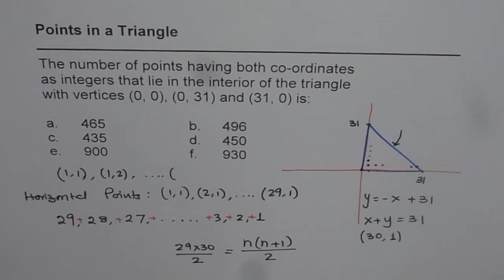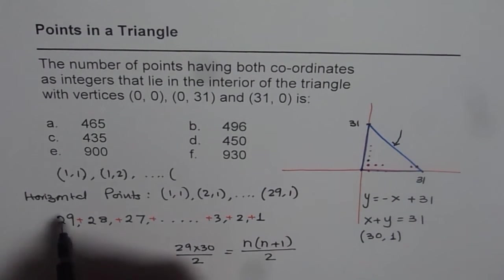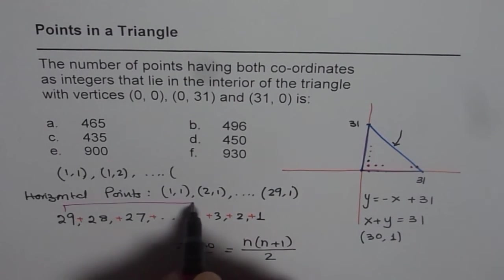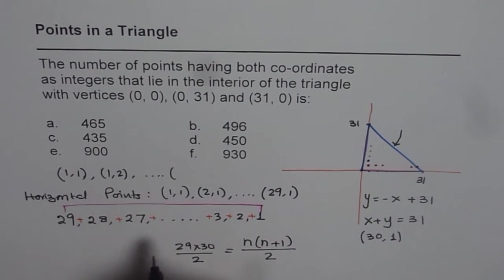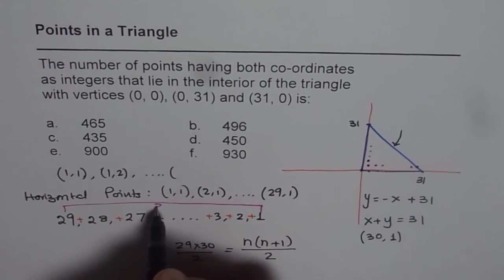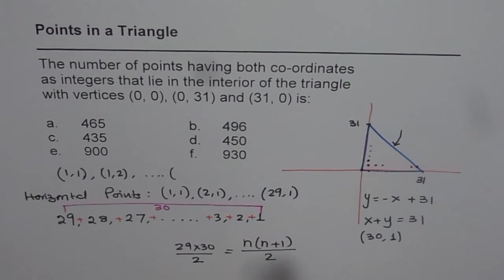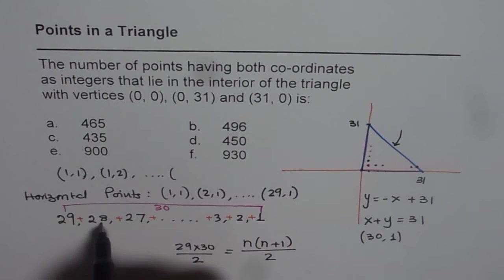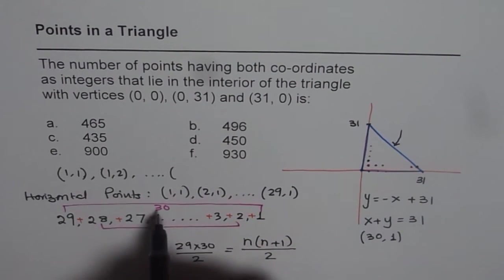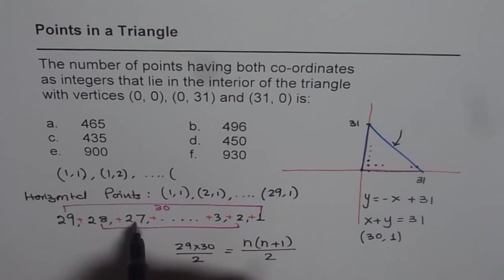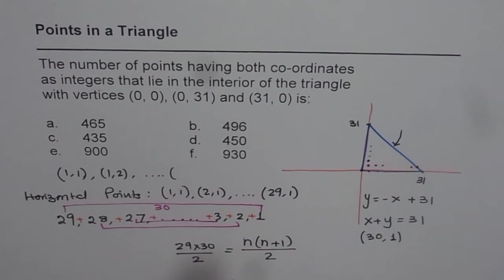We could also derive this result. Derive how? If I add 29 and 1, what do I get? I get 30. Do you see that? If I add 28 and 2, I will again get 30. If I add 27 and 3, I will get 30.